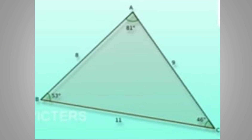Now you can see triangle A, B, C. A and B is 8 cm, B and C is 11 cm, and C and A is 9 cm. The angles of this triangle are 58, 73, and 46 degrees. The small side, AB, is 8 cm and it is opposite to angle C.